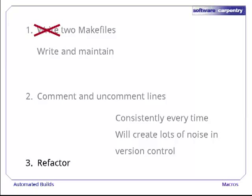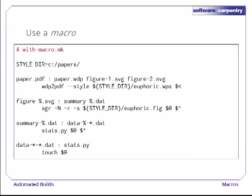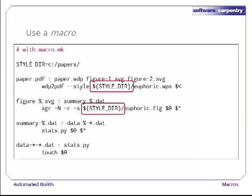The third option — the right one — is to refactor our makefile to make the problem go away entirely. We can do this by defining a macro, just as we would define a constant or variable in a program. Here's our makefile with a macro defined and used. The definition looks like definitions in most programming languages. The macro is called styledir and its value is C:/papers. To use the macro, we put a dollar sign in front of it, just as we would do in the shell, and wrap its name in curly brackets. This tells make to insert the macro's value, so that these two directory paths are what we want on our laptop.